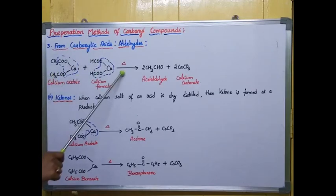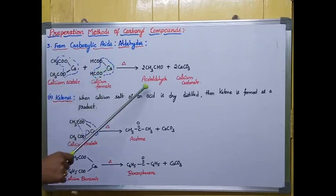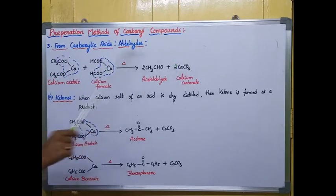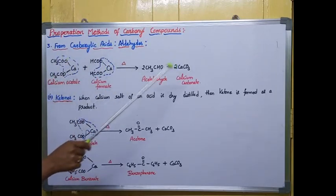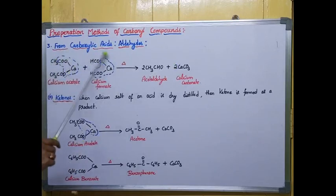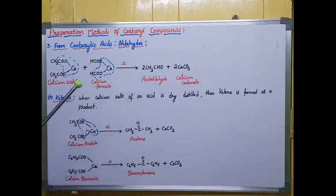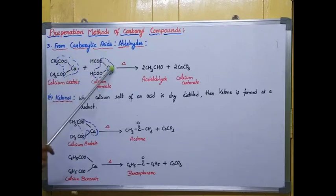Calcium acetate and calcium formate undergo distillation in the presence of high temperature, producing acetaldehyde. You can observe two molecules of calcium carbonate (CaCO3) liberating out, and CH3CHO — two molecules of acetaldehyde coming out. So aldehydes are prepared by the distillation of calcium acetate and calcium formate.